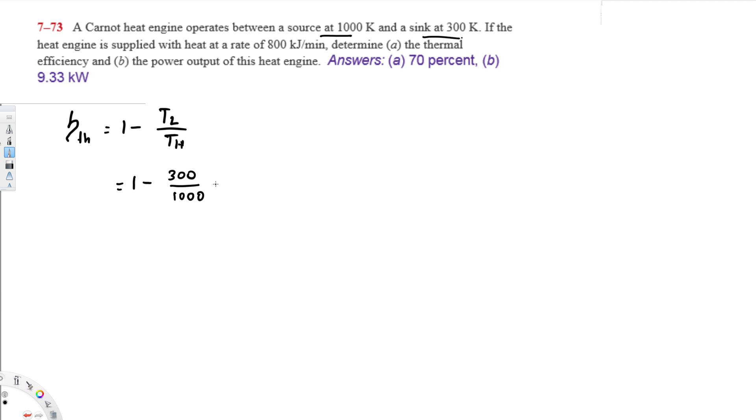This is the same as 1 minus 0.3, that is equal to 0.7, and that is equal to 70 percent. So the thermal efficiency of this heat engine is going to be 70 percent.